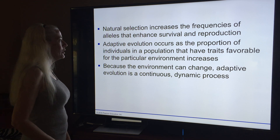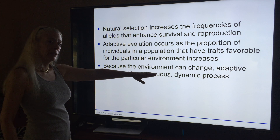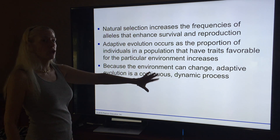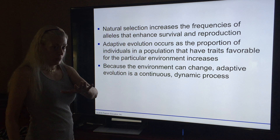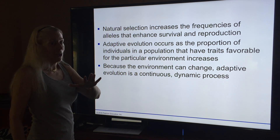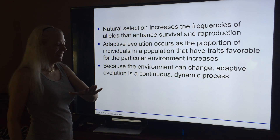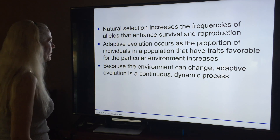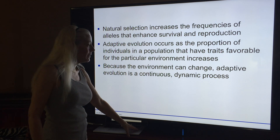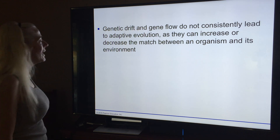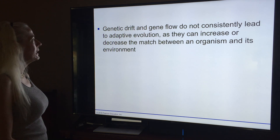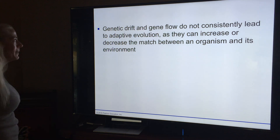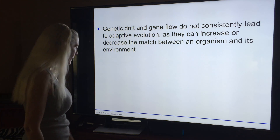The environment can change, and we know the environment is changing. Adaptive evolution is continuous and a dynamic process. Genetic drift and gene flow don't consistently lead to adaptive evolution, as they can increase or decrease the match between an organism and its environment.